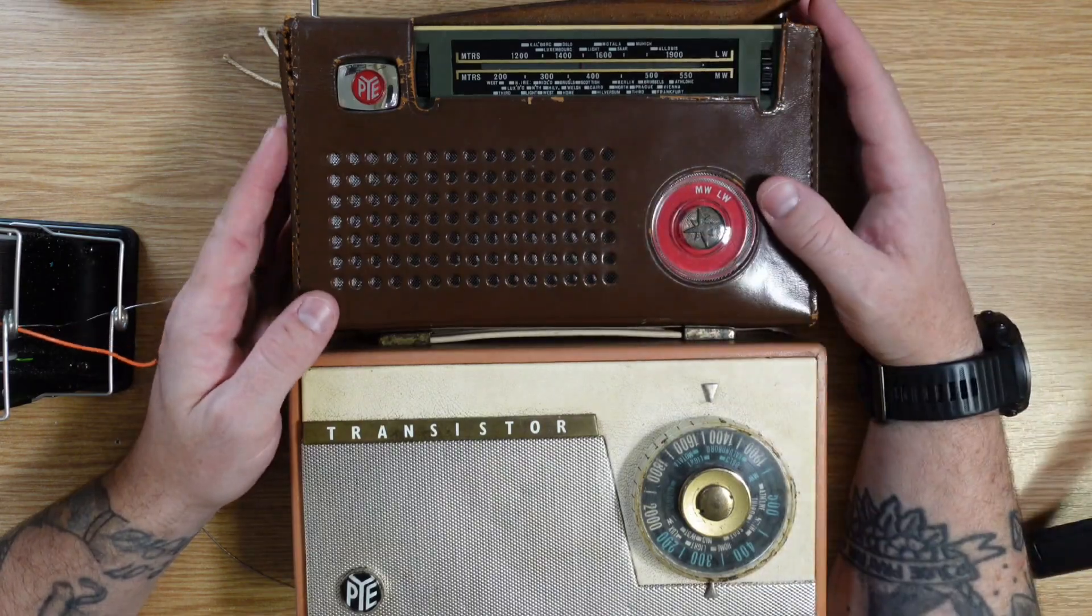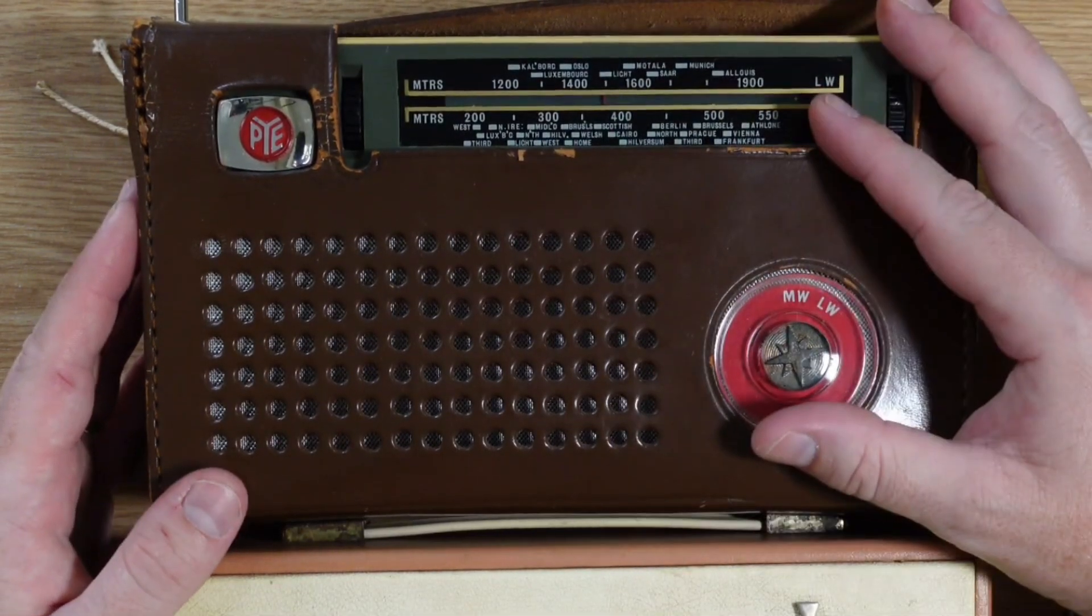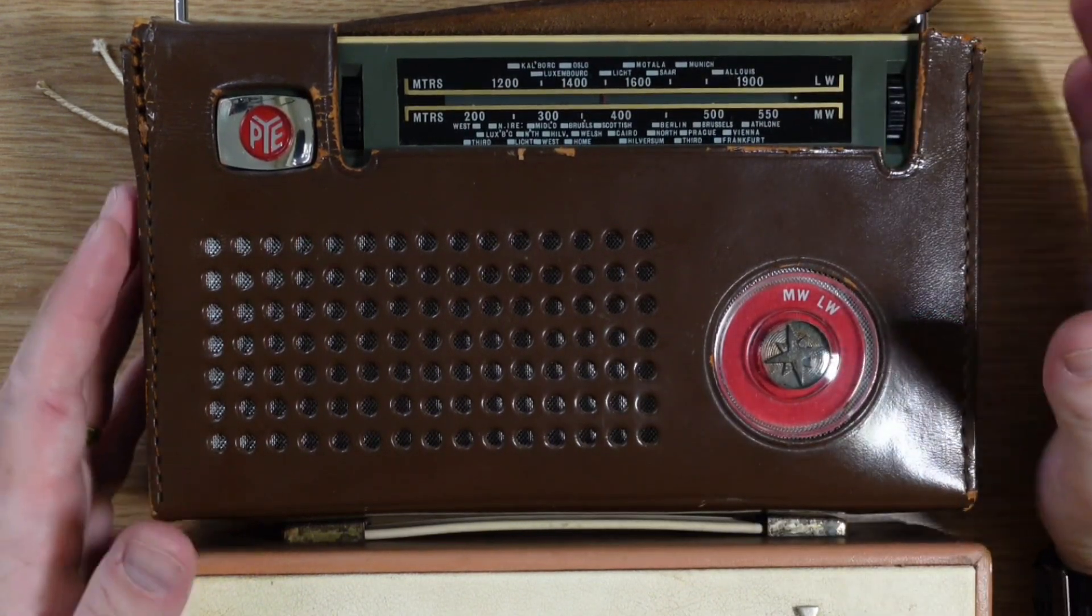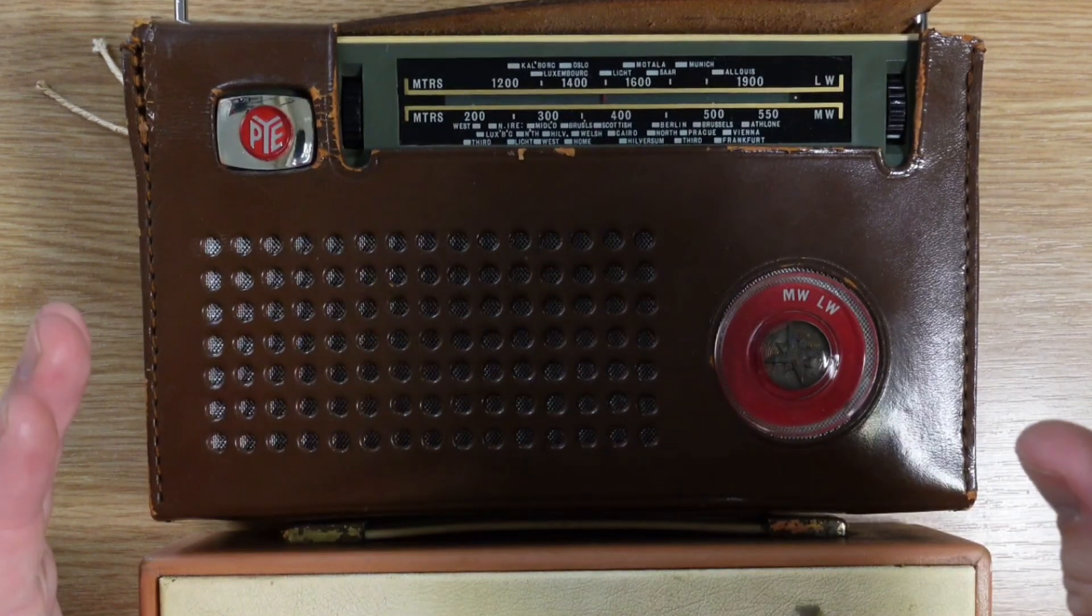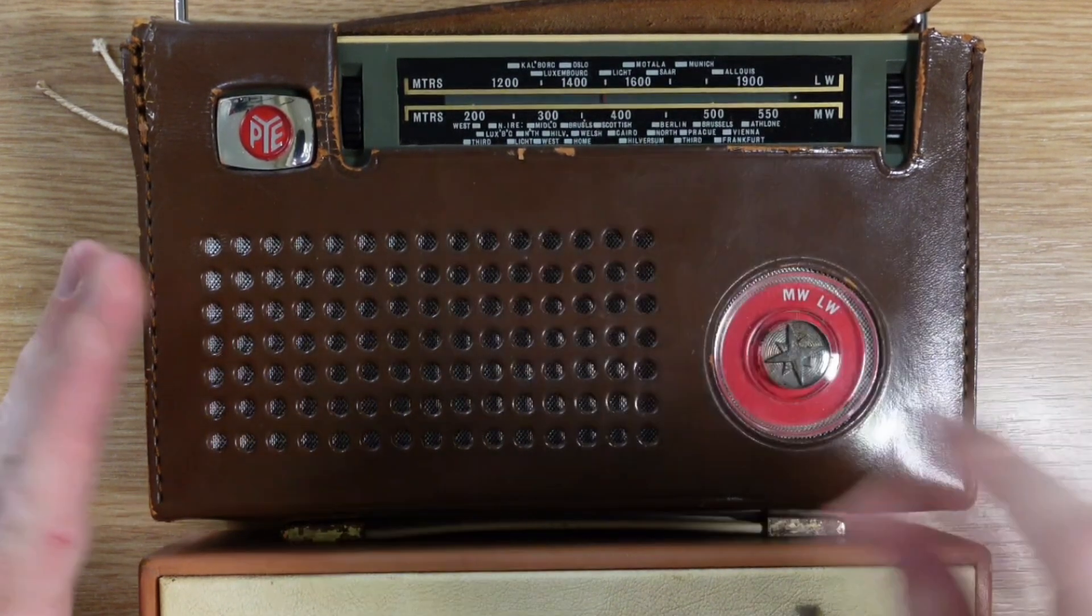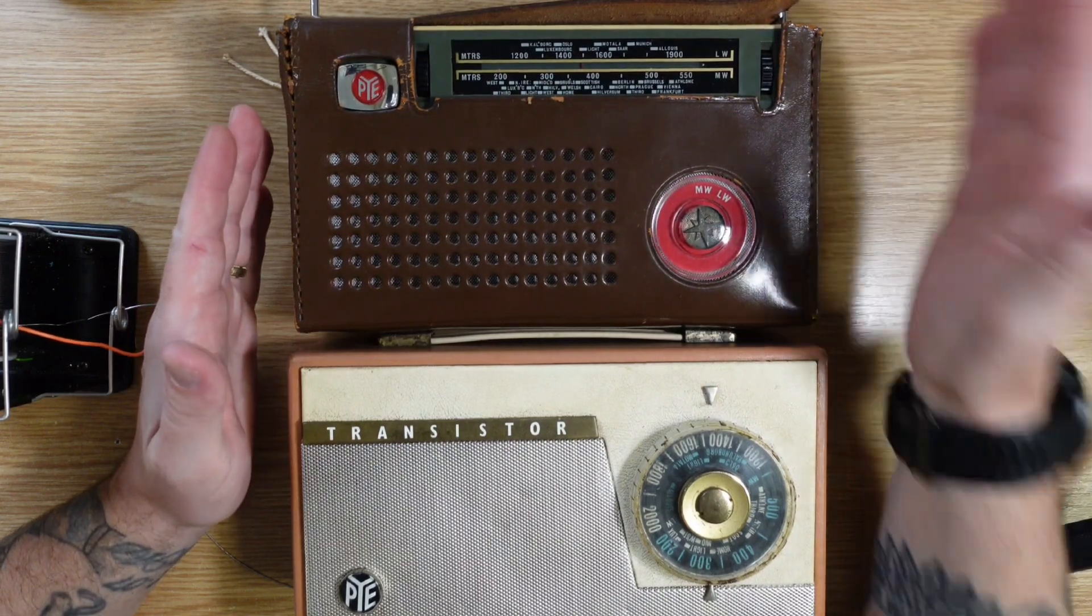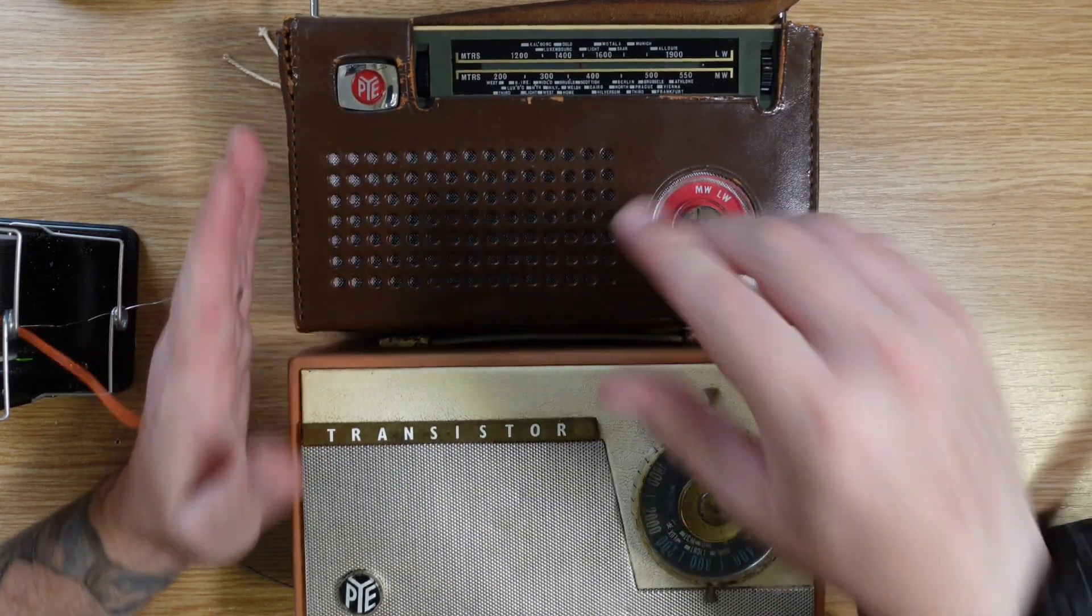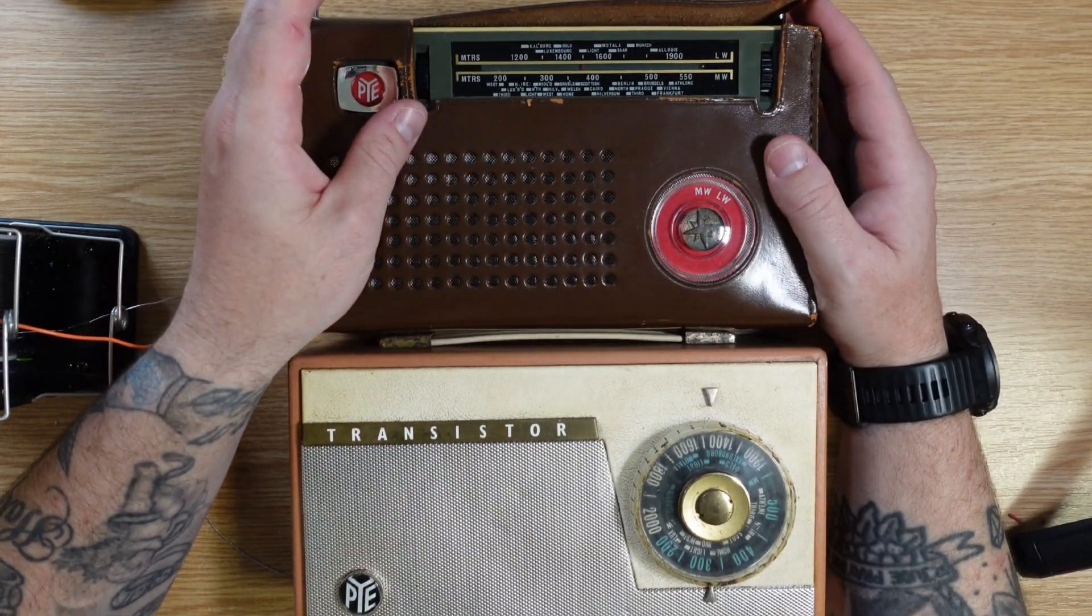And then we'll move on to the crème de la crème, the pièce de la résistance. And this bad boy, because we know that these usually, or half the time, either use NKT or Toshiba transistors inside. So if we can find the elusive NKT275 in here, that will be mission accomplished and all the money I spent on it will be well spent.